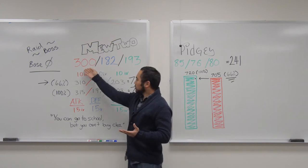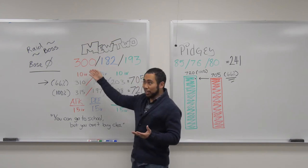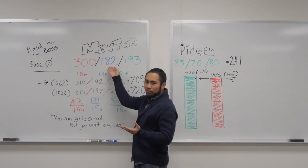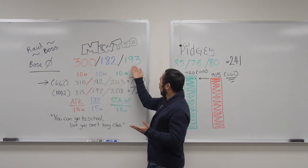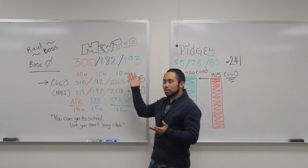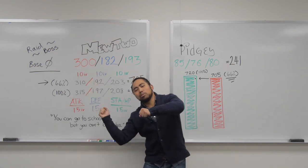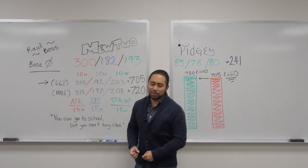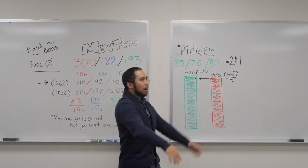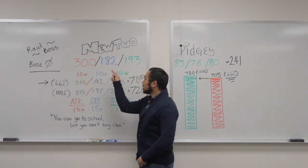300 Attack, which is the highest in the game. 182 Defense, which is alright. And 193 Stamina, which is, you know, so-so. But this is what we're looking at here. Attack. It'll Barry bond some things. That's huge.